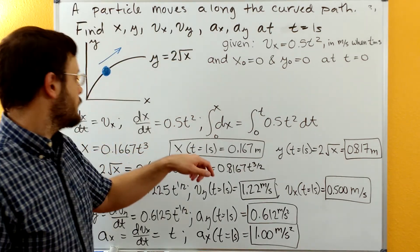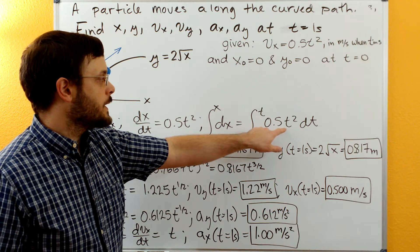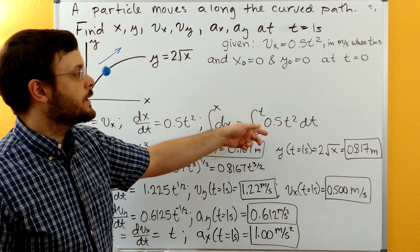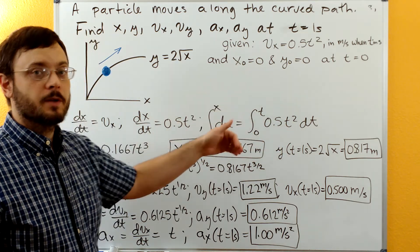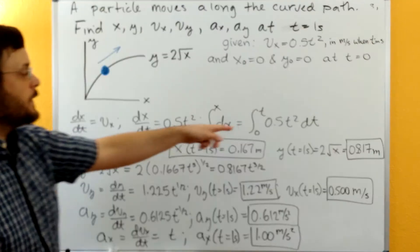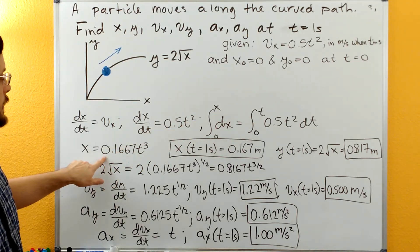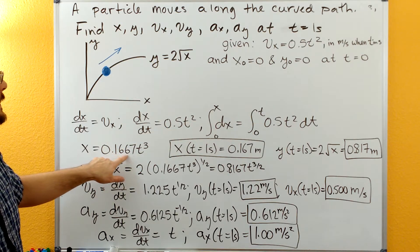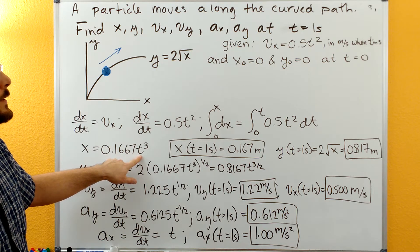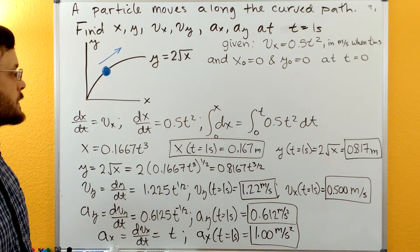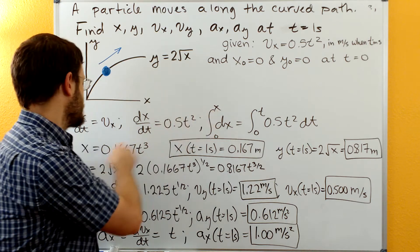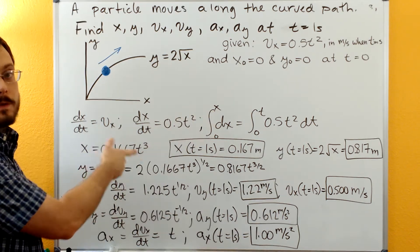So integrating this, we wind up with 0.5 t squared becoming t cubed divided by 3. So 0.5 divided by 3 gives us 0.1667 times t cubed. We'll plug in the limits out here. So we get x equals x minus x equals 0.